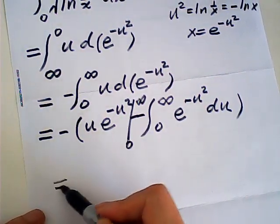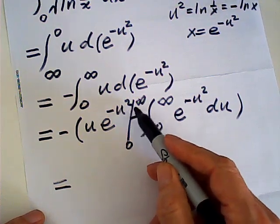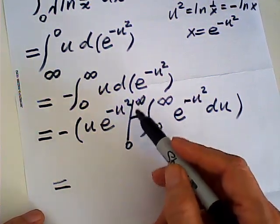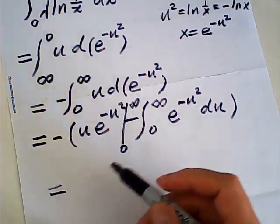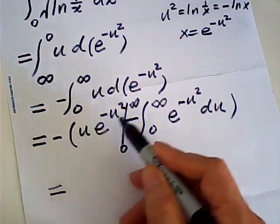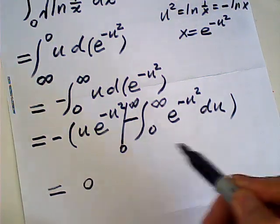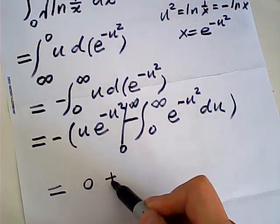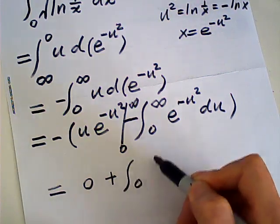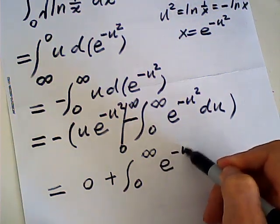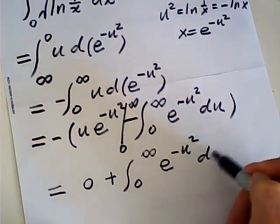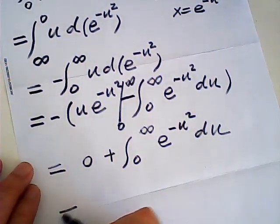Now when u is infinity, that's 0. You can use L'Hôpital's rule to easily find the limit equals 0. And as u equals 0 is also 0. This becomes plus the integral from 0 to infinity of e to the negative u squared du.